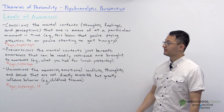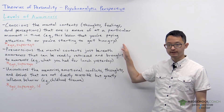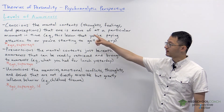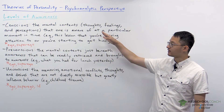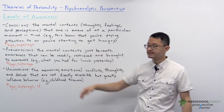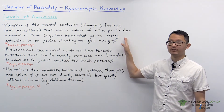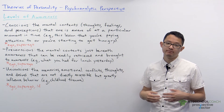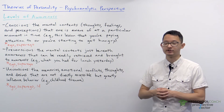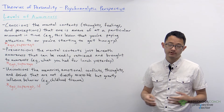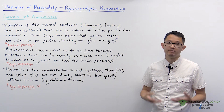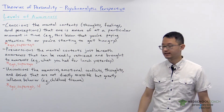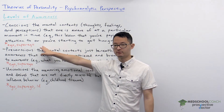Now let's look at each level more closely. First, the conscious. These are our mental contents — our thoughts, feelings, and perceptions that we are aware of at a particular moment in time. For example, this could be this lesson that you're paying attention to right now, or you're starting to get a bit hungry. This is our awareness, and this includes our ego and superego.